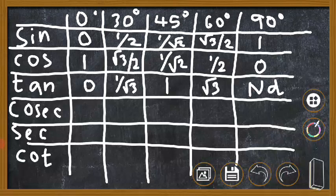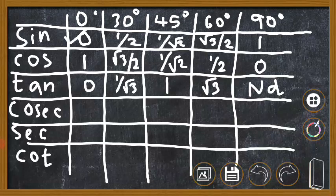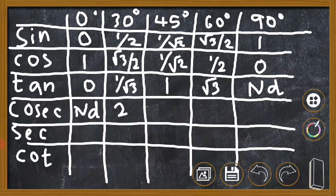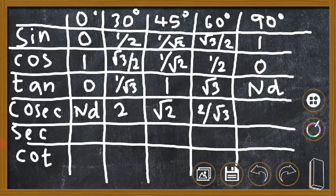The remaining three ratios are easy. Cosec is the reciprocal of sin — swap the numerator and denominator. So cosec 0 is 1/0, which is not defined. Cosec 30 is the reciprocal of 1/2, which is 2. Cosec 45 is the reciprocal of 1/√2, which is √2. Cosec 60 is the reciprocal of √3/2, which is 2/√3. And cosec 90 is the reciprocal of 1, which is 1.